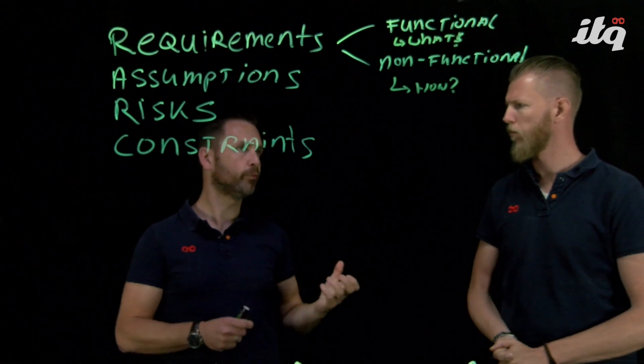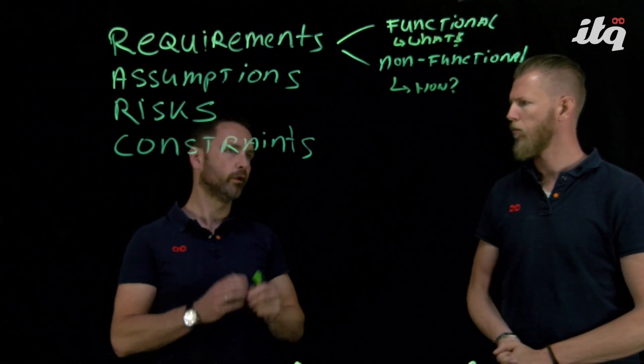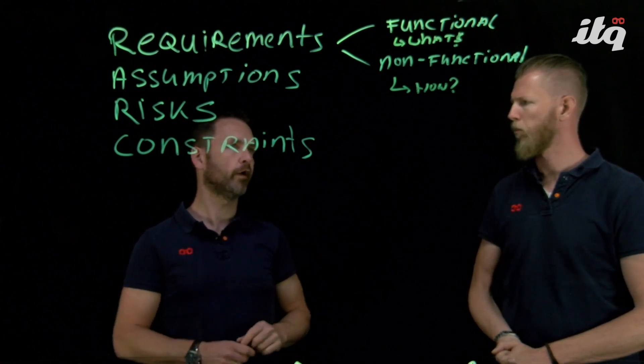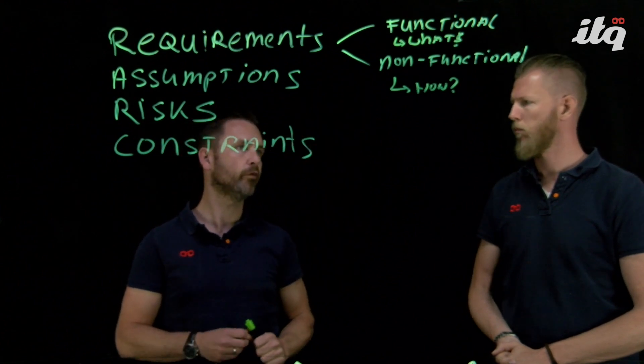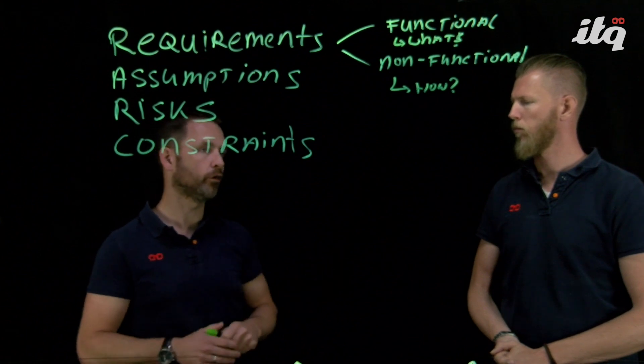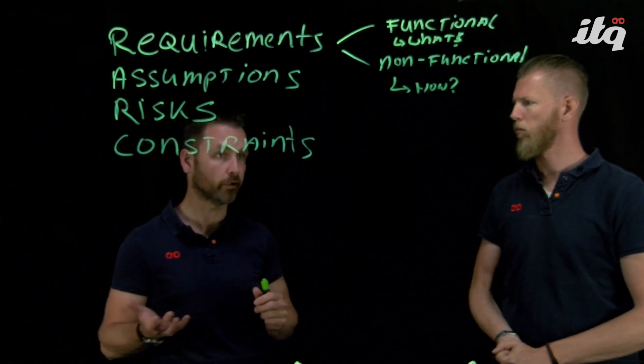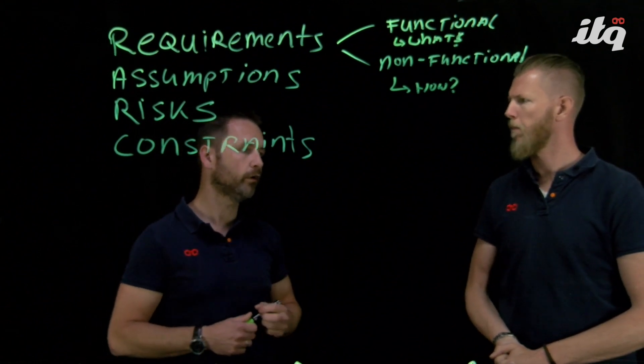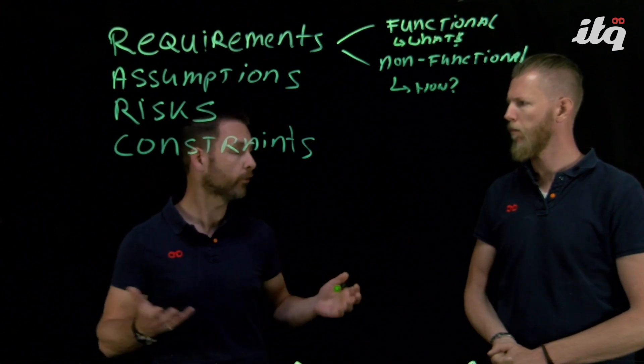If you take the analogy of the house into account again, it could mean that you would like to accommodate four people in the house. But you're not stating how you're going to accommodate that, not in terms of the number of rooms or beds. You just want to accommodate four people in that house. So the functional is all about what. The non-functional is all about how.